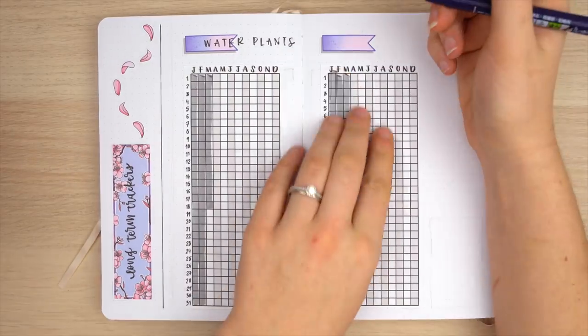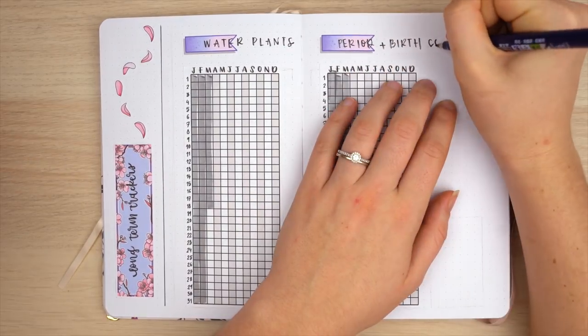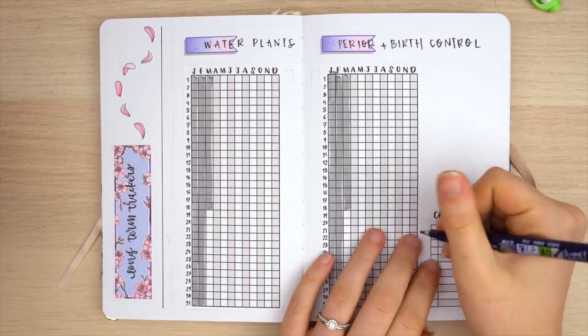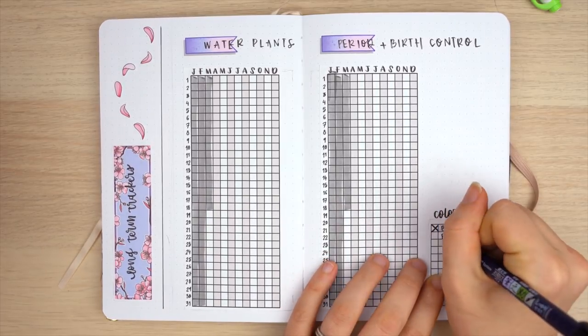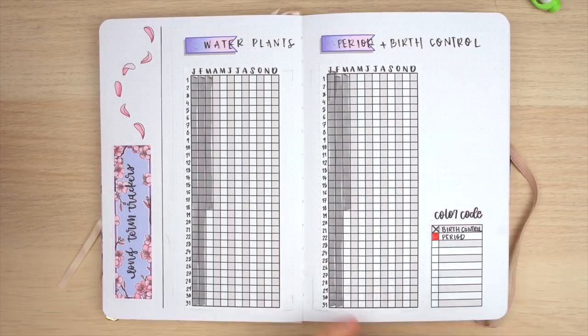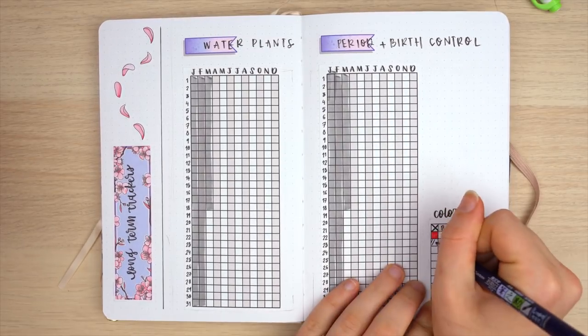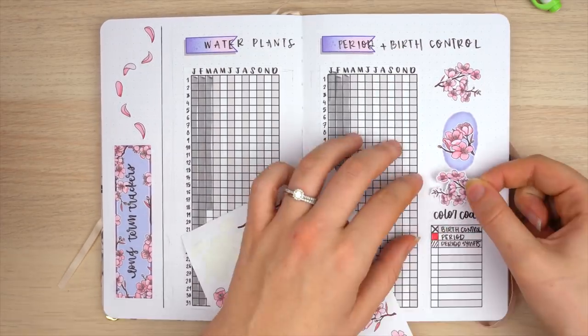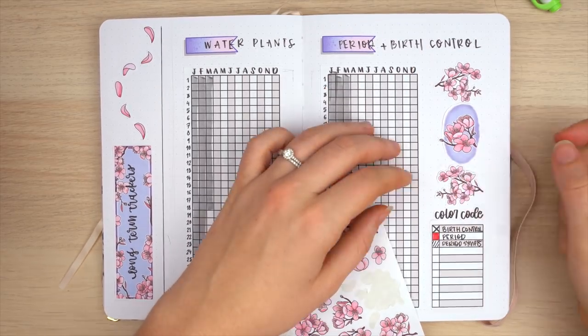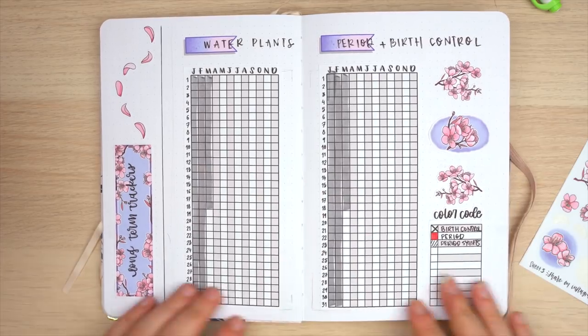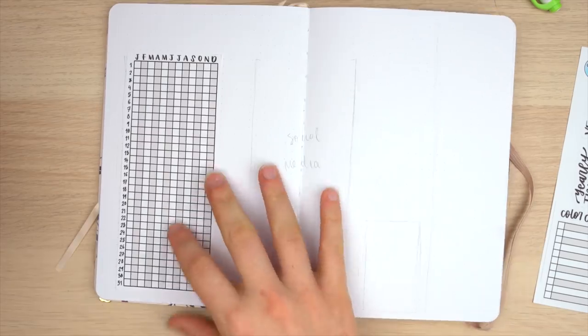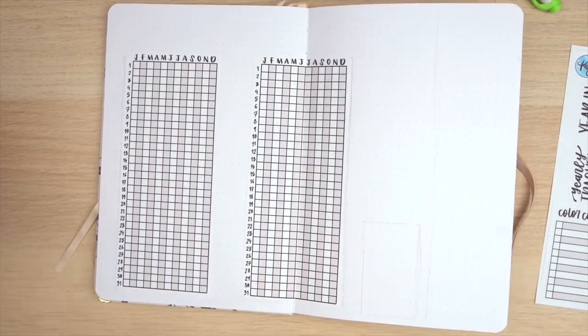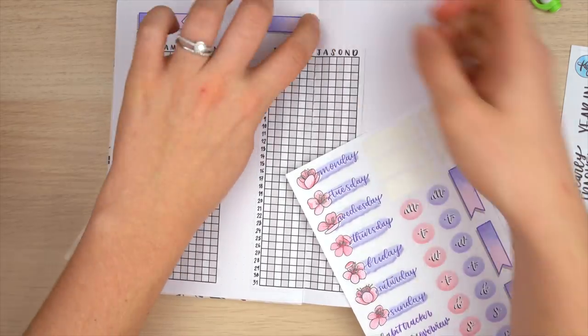I'm using four of these yearly tracker stickers which are included in that bujo migration 30% off bundle, and I'm also creating a color code for a couple of these. For my period and birth control tracker, I'm using the color code stickers there to keep track of how to signify when I take my birth control, when I have my period, and when I'm having some period symptoms. I'm just finishing this spread off with some cherry blossom decoration. I really love that I'm using three different sticker themes throughout this whole setup, but they all come together with that spring motif, so it makes it really fun setting up all these spreads, and I think it's also going to encourage me to look back on these spreads more often.